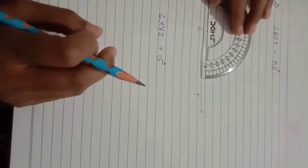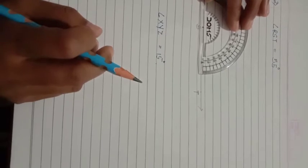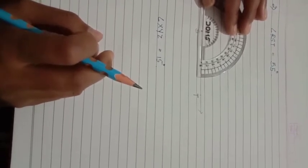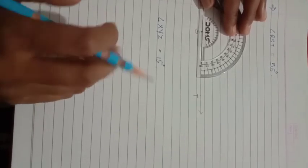Then we take the protractor and keep the center of the protractor at point S so that the baseline of the protractor coincides with ray ST. Again we use the inner scale to measure the angle 55 degrees.